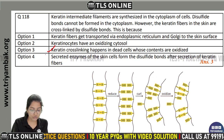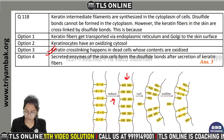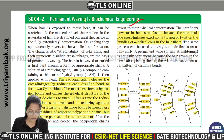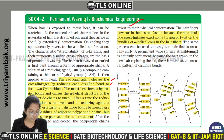In their reduced state, these do not form disulfide bonds. But if we look at the permanent waving experiment, a reducing agent cleaves the crosslinks — each disulfide bond is broken to form two cysteine residues.